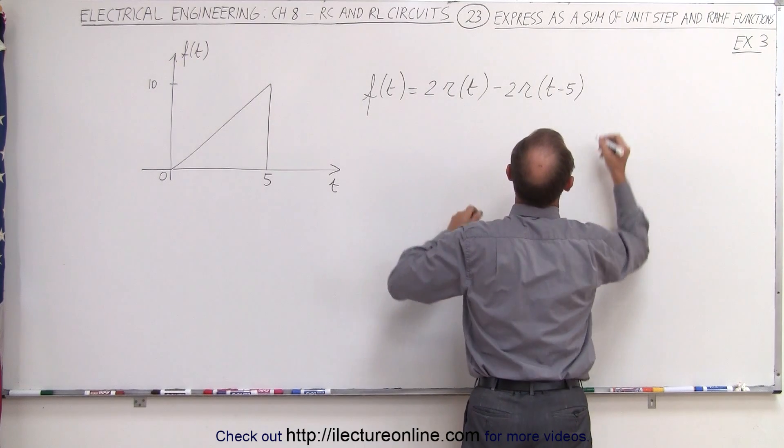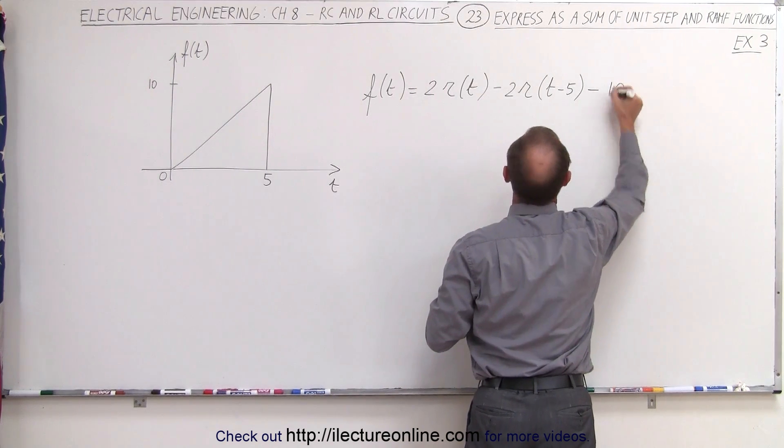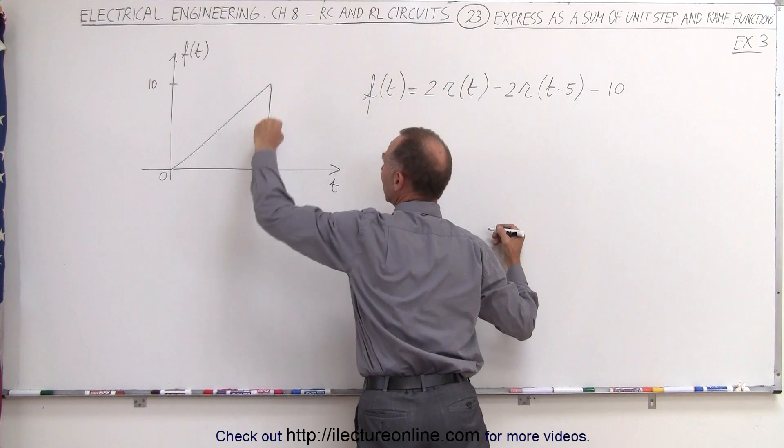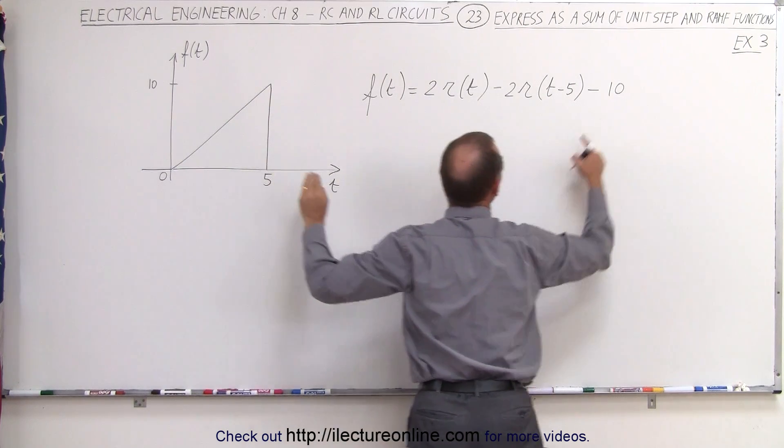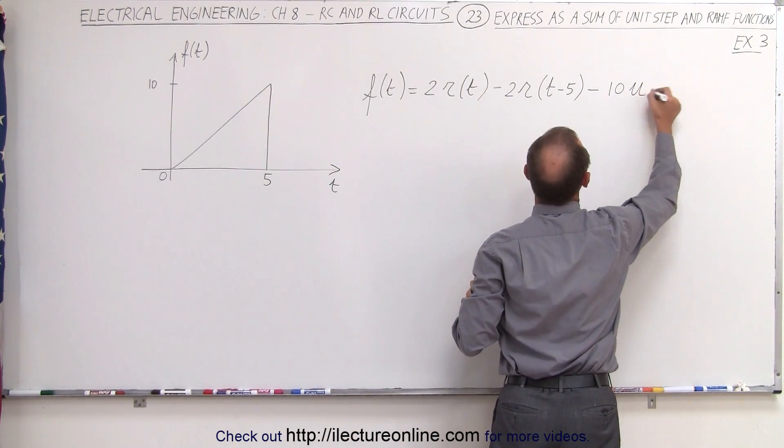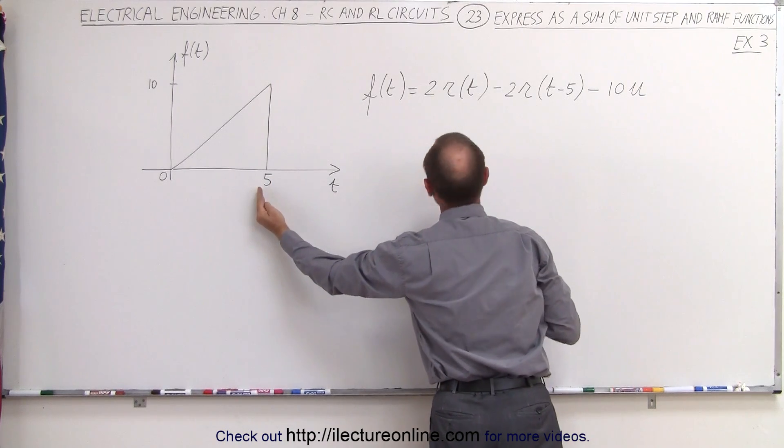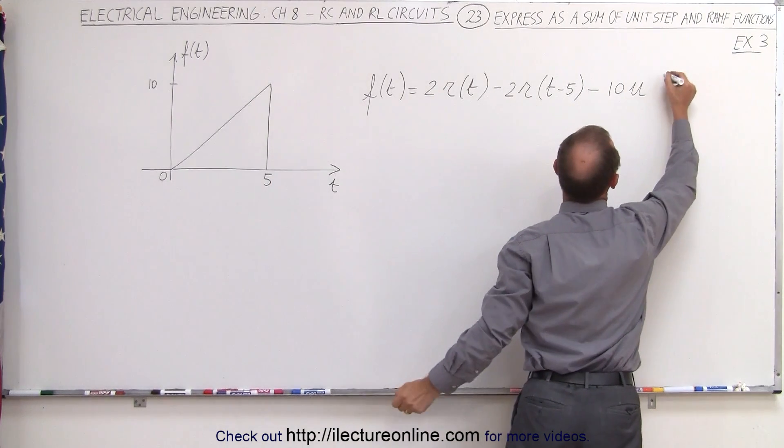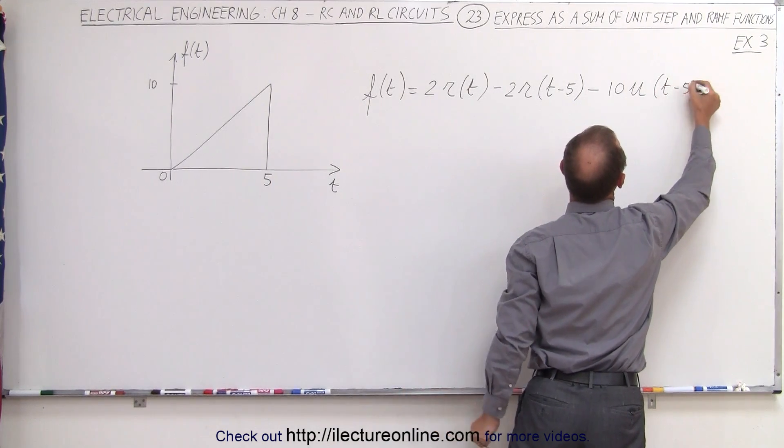So we also add a minus 10, because at this point we're up here at amplitude 10, we need to come back down to 0. So minus 10 times the unit step function, which is also offset by 5 seconds, so we go t minus 5.